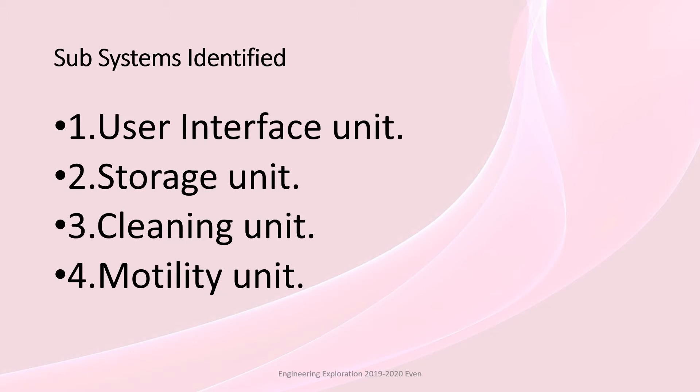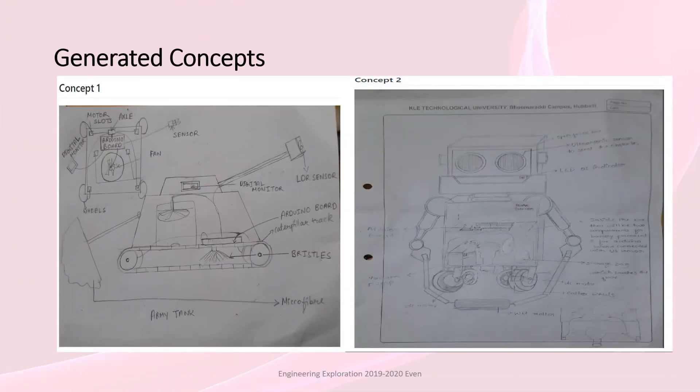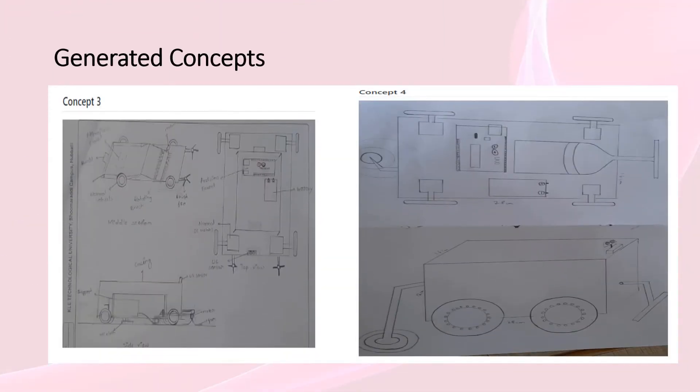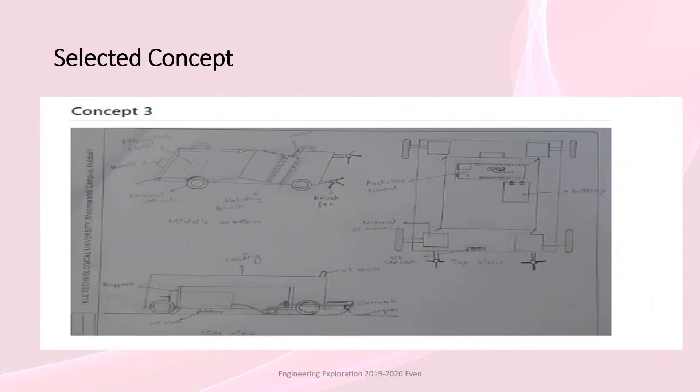Our subsystems identified were user interface unit, storage unit, cleaning unit and motility unit. With our creativity, we generated 4 new and unique concepts. Concept 1 was by Akanksha, Concept 2 was by Rohit, Concept 3 was by Pratyusha, Concept 4 was by Rishabh. We decided to go ahead and work with Concept 3.